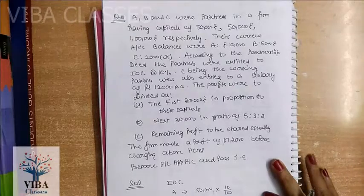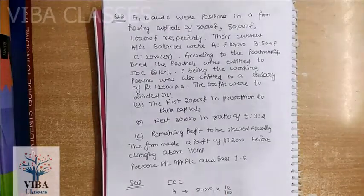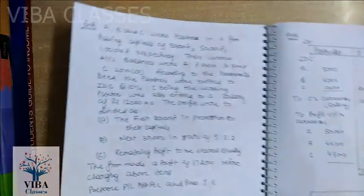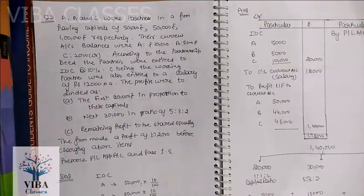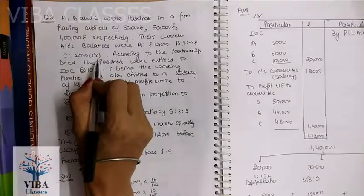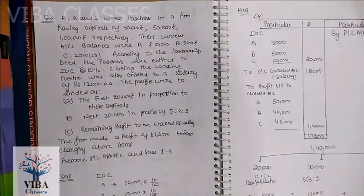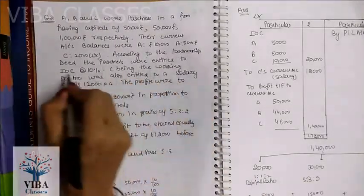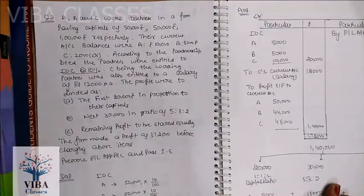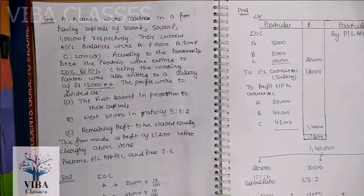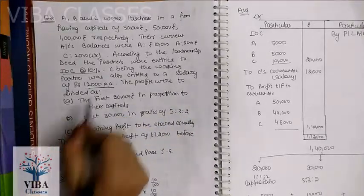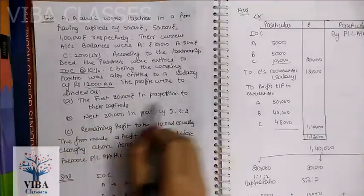A, B, and C were partners in a firm having capital of Rs. 50,000, Rs. 50,000, and Rs. 1 lakh respectively. Their current account balances were A: Rs. 10,000, B: Rs. 5,000, and C: Rs. 2,000 debit (negative). This is a fixed capital method. According to the partnership deed, partners were entitled to interest on capital at 10%. C, being the working partner, was also entitled to a salary of Rs. 12,000 per annum. Profits were to be divided with the first Rs. 20,000 in proportion to their capital.